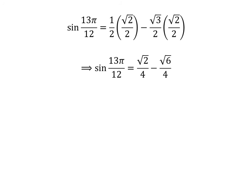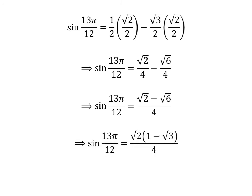Straight multiplication gives us sine of 13 times pi upon 12 is equal to square root of 2 upon 4 minus square root of 6 upon 4. As the denominator of both fractions in the above expression is the same, sine of 13 times pi upon 12 is equal to square root of 2 minus square root of 6 upon 4. Taking out the common factor square root of 2 in the numerator gives us sine of 13 times pi upon 12 is equal to square root of 2 times 1 minus square root of 3 upon 4.